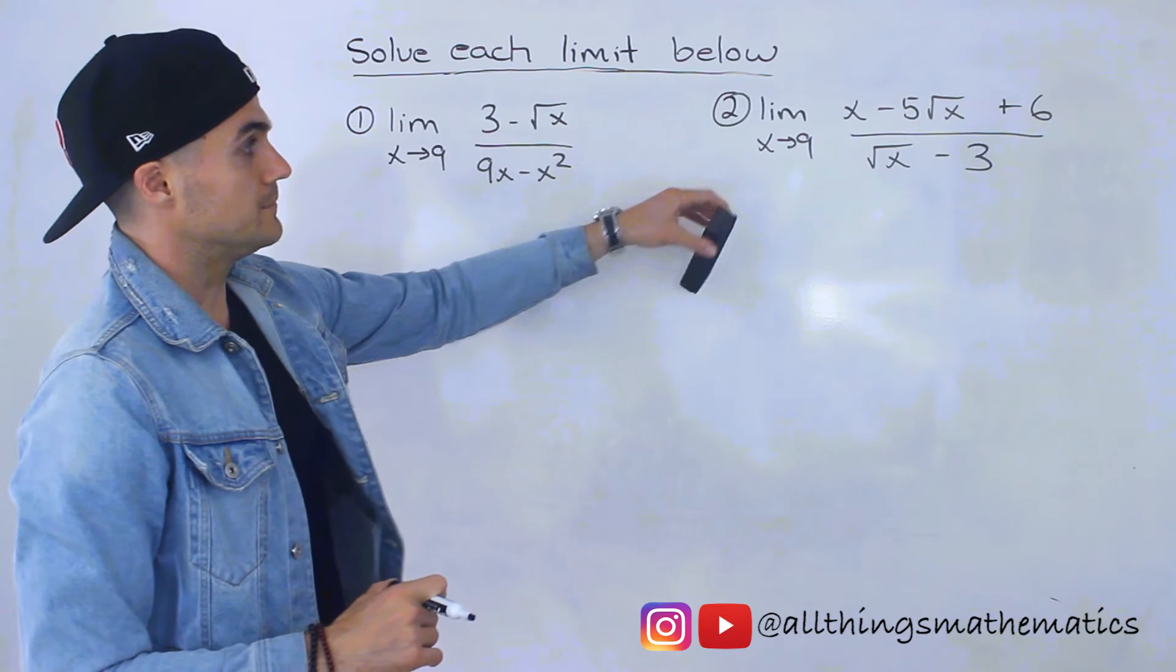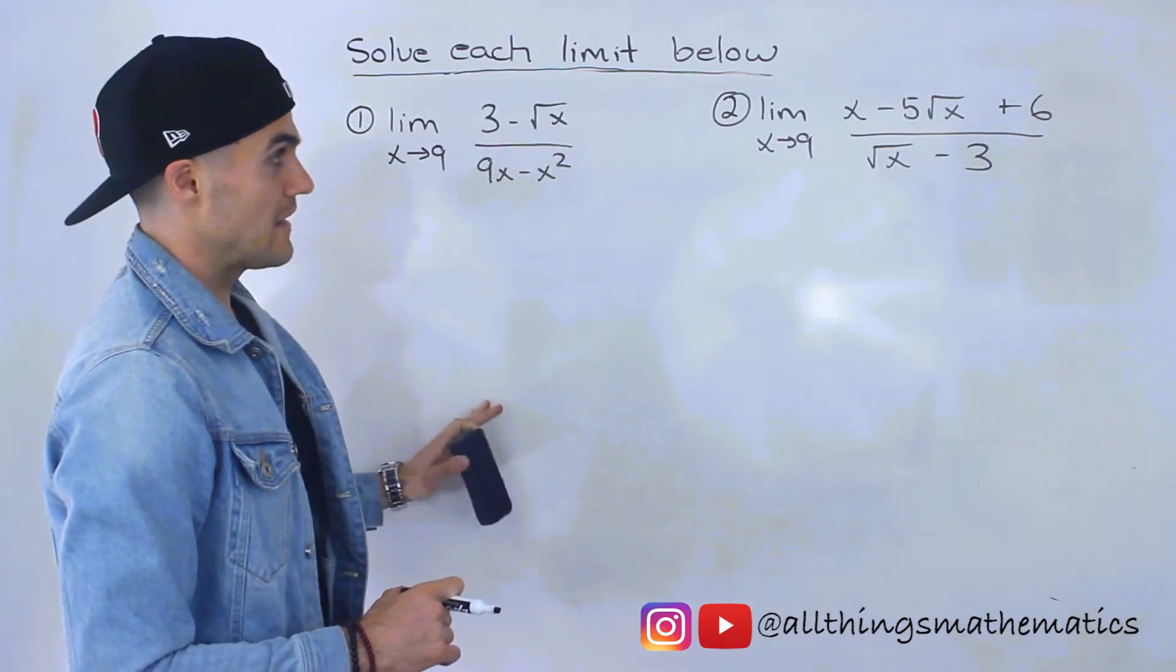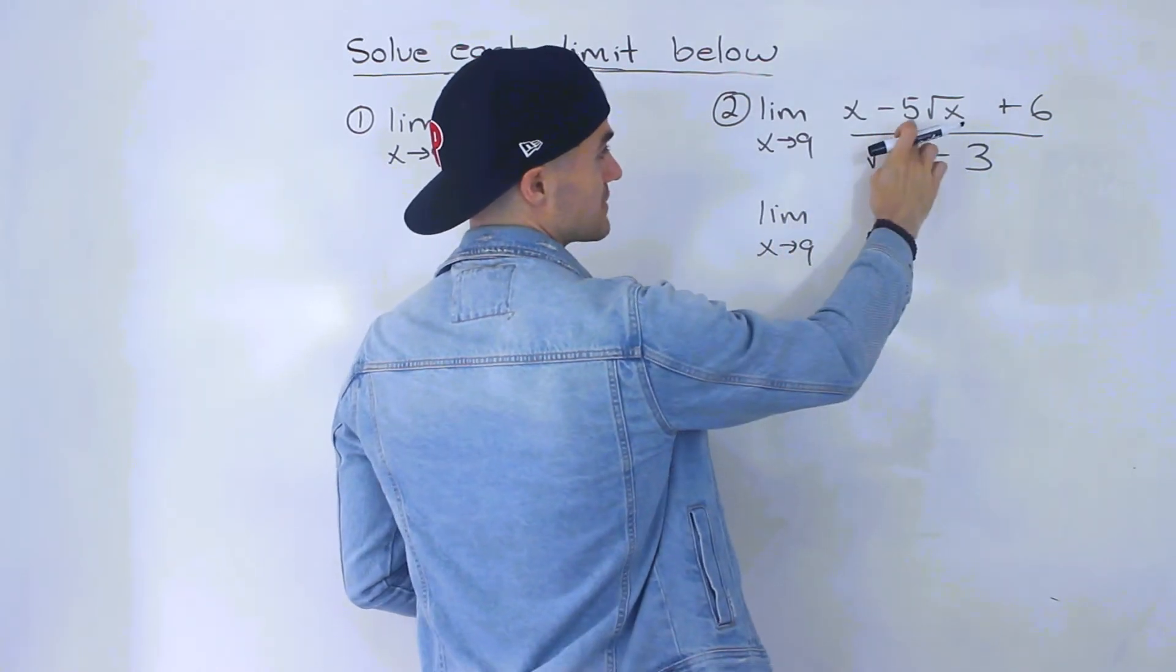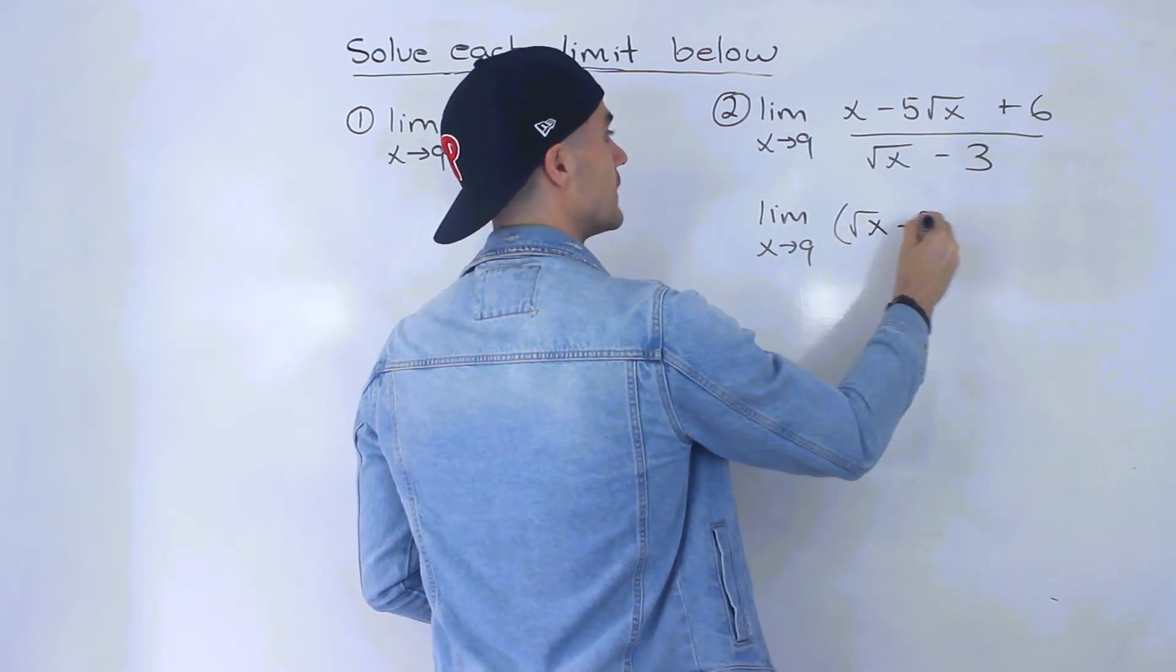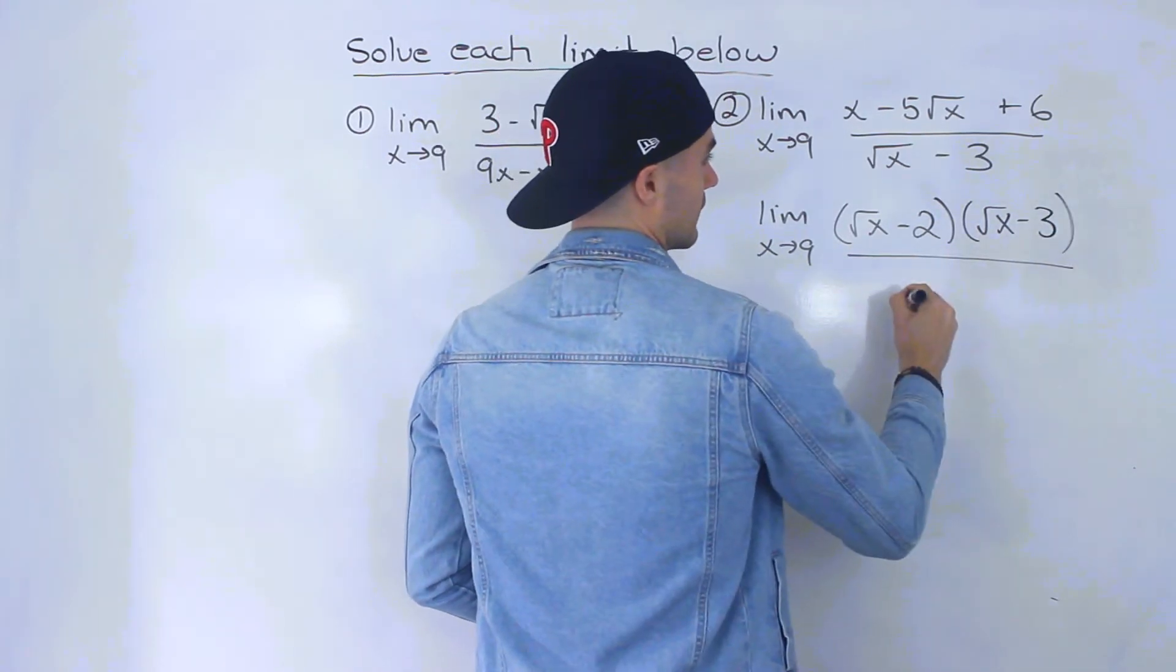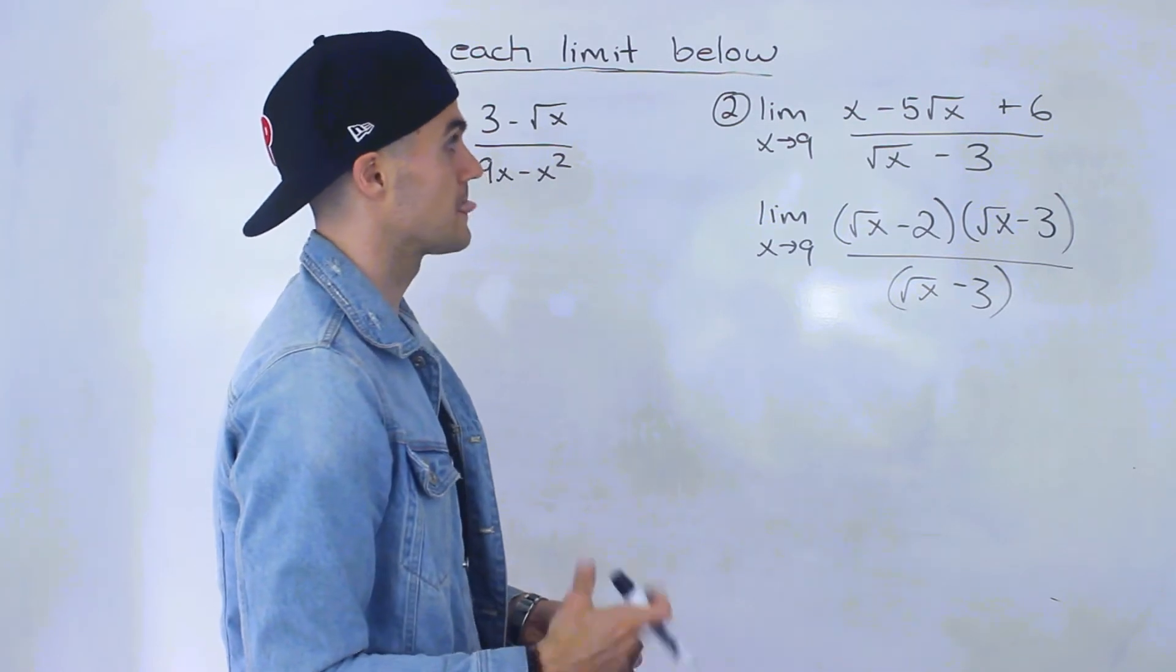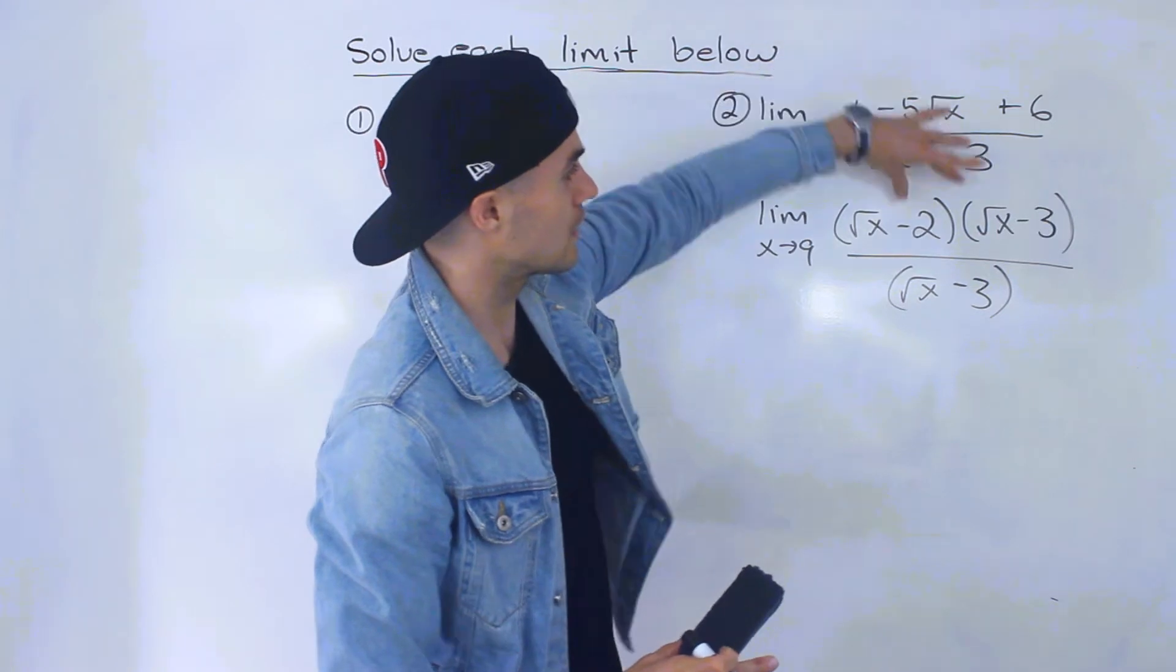Now, for the second problem, you can use method 3 as well. Just plain factoring. Notice that x minus 5 root x plus 6, we could factor that as (root x minus 2)(root x minus 3). But again, it's a little more difficult to tell that you can do that. I can tell because I've dealt with these limits so many times.